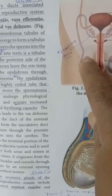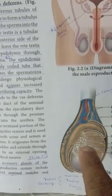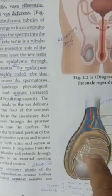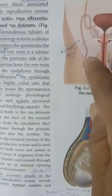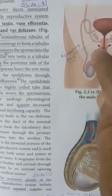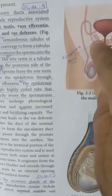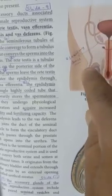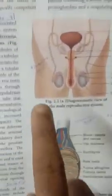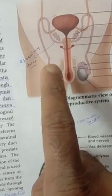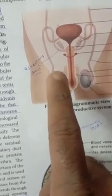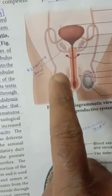The epididymis connects to the vas deferens, which connects further to the seminal vesicle and prostate gland. The male gametes (sperm) are formed in the seminiferous tubules and are temporarily stored in the epididymis region, which acts as a storehouse for sperms.